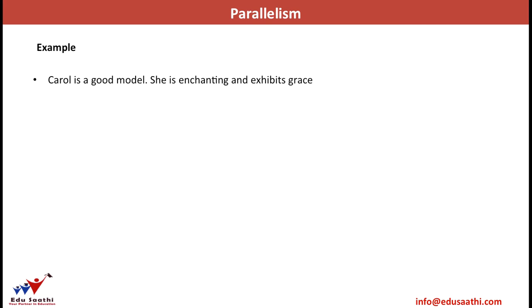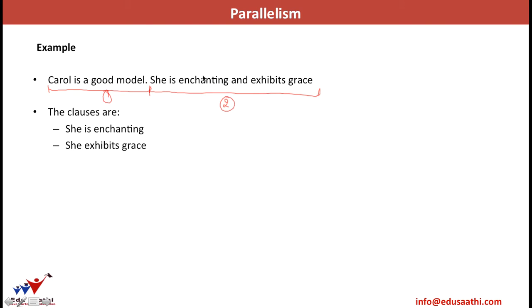Let's take another example: 'Carol is a good model. She is enchanting and exhibits grace.' This question is tricky because there is a full stop between the two sentences, meaning we must check each separately. The first sentence is a single clause and cannot have a parallelism error. The second sentence does. Breaking the second sentence: clauses are 'she is enchanting' and 'she exhibits grace.' 'Enchanting' is an adjective, while 'grace' is a noun — the two clauses have different structures.